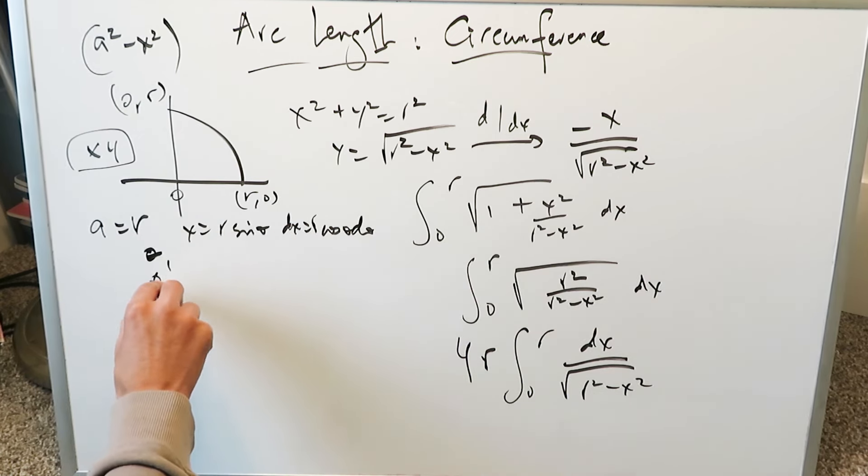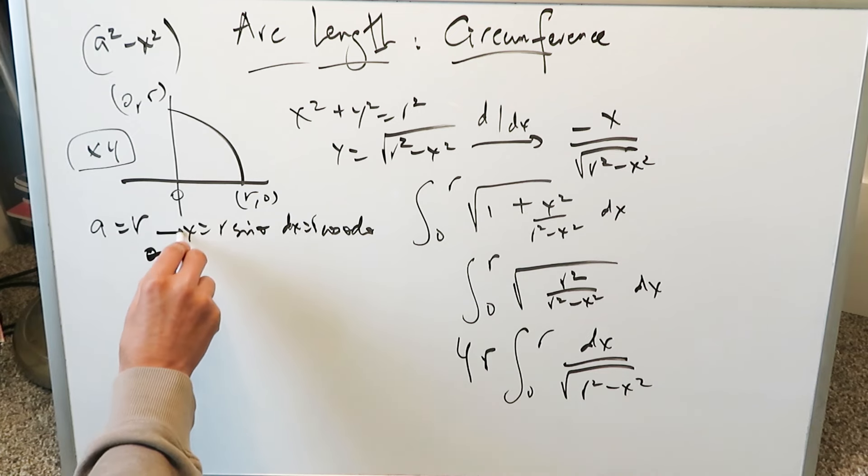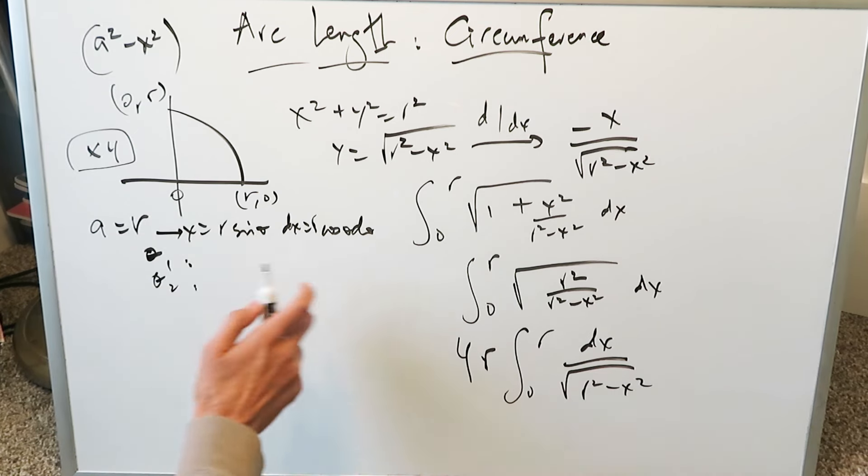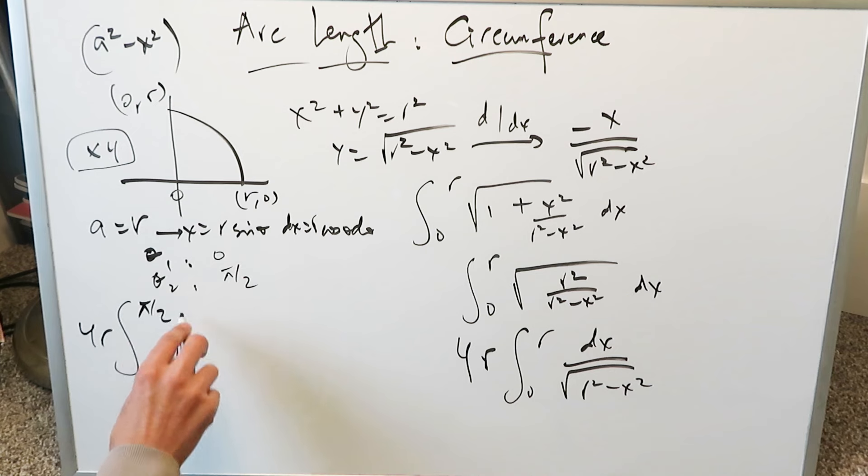We know θ₁ and θ₂ are easy to determine using the limits 0 and r, which will be 0 and π/2. In terms of your integral you're looking at 4r. You have 0 to π/2. You have a dx which is r cos θ dθ.